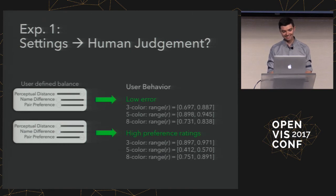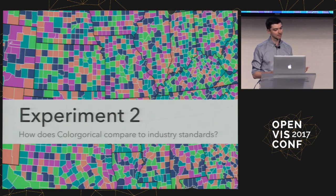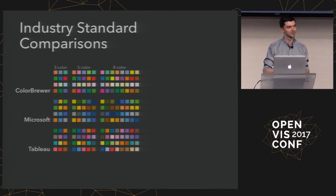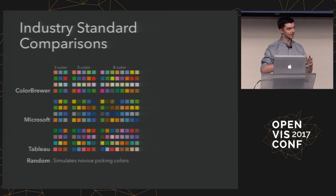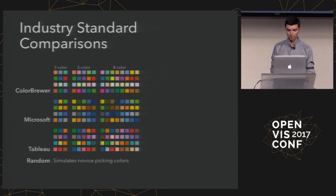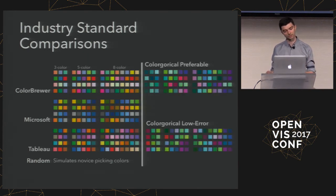The next question is whether this tool is actually useful compared to what people already use. We compared against Color Brewer for three, five, and eight colors, Microsoft, Tableau's old colors, and a random condition simulating someone randomly picking discriminable colors. We used all data from experiment one to figure out what settings generated the most preferable palettes. The experiment was basically the same — testing discriminability and preference rating for three palette sizes across six palette sets with four versions per set.